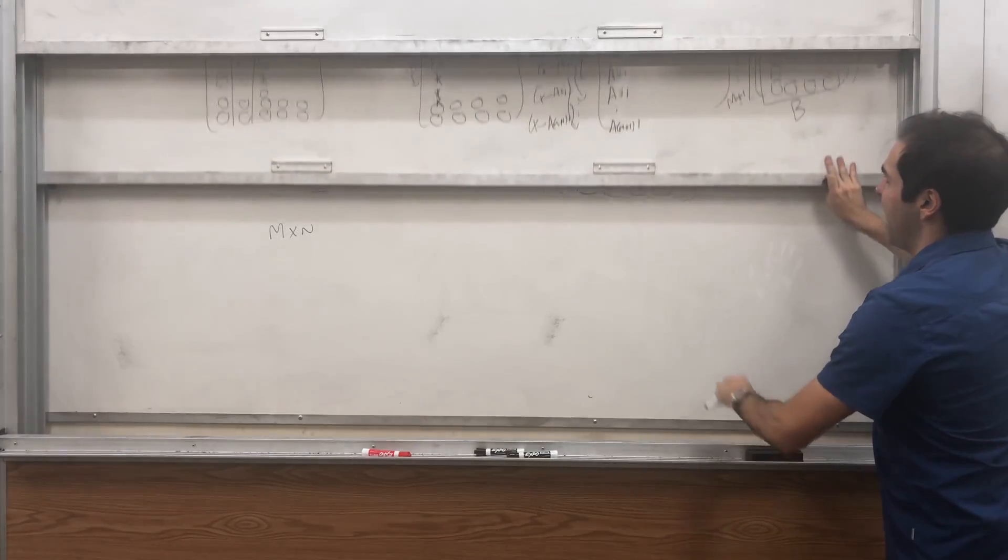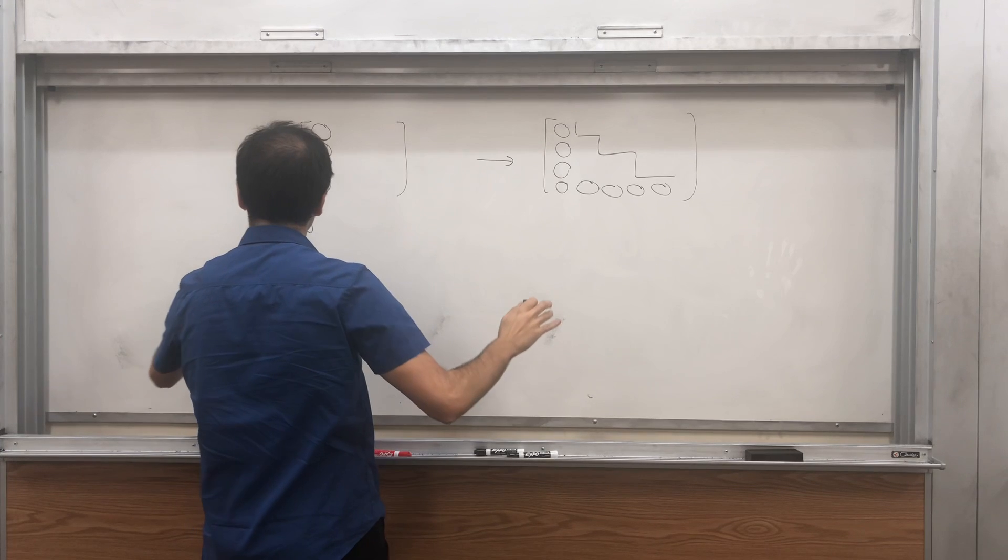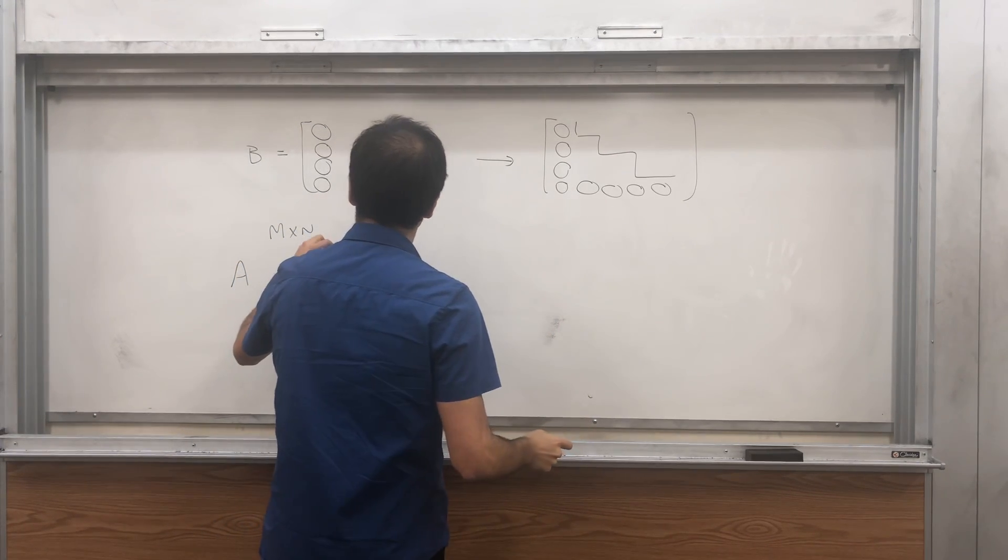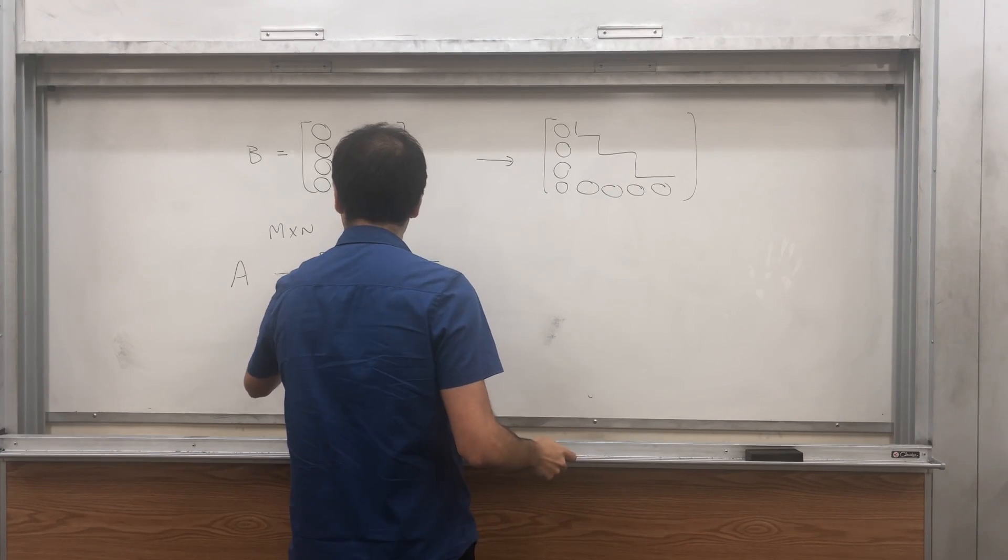And then let's look at A. So what does A look like? We said A, you row reduce it to something like one, and then bunch something, and then B.